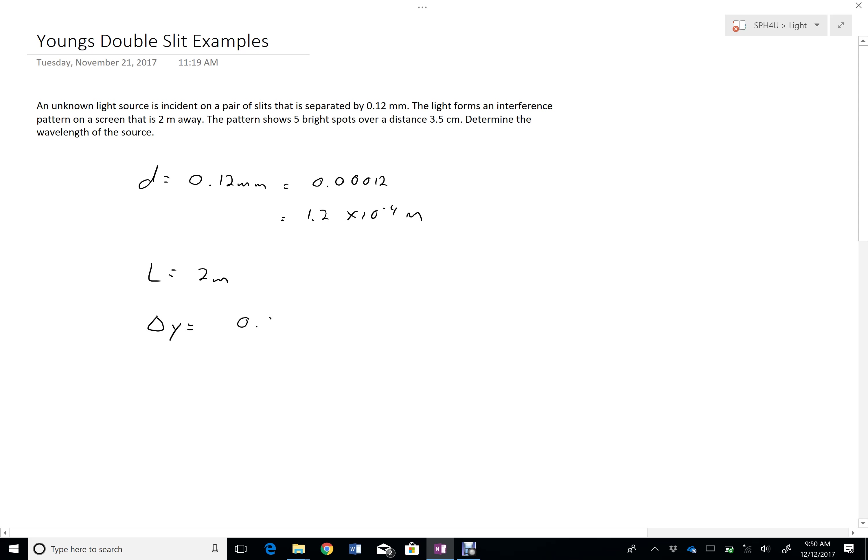In 0.035 meters, I have 5 bright spots. So 1, 2, 3, 4, 5. And my point here is that I have 1, 2, 3, 4 actual delta Ys. If I have 5 bright spots, that means 4 delta Ys.